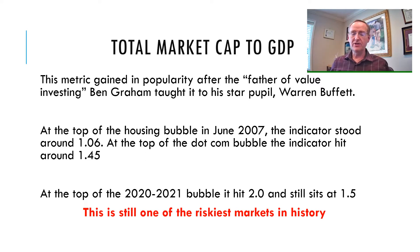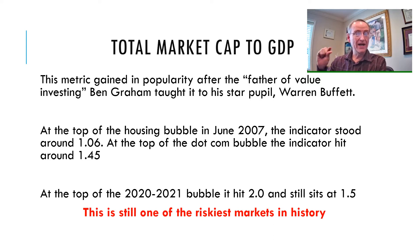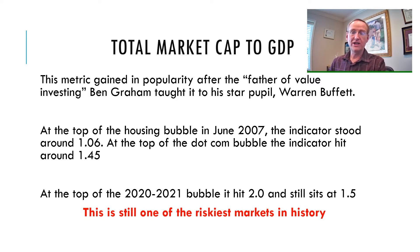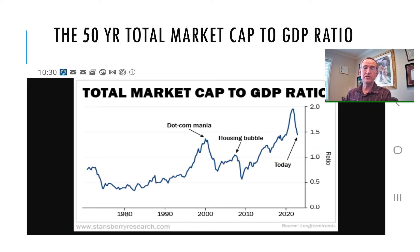At the top of the housing market bubble, the indicator stood at 1.06 — so it was above that 1 level. At the dot-com boom, the market was running and it hit 1.45, so it was extremely overvalued at that point. The market hit 2 for the first time ever at the end of last year when the markets peaked. And even after the most recent sell-offs down through October of this year, we're still sitting at 1.5, which is above where we were during the dot-com boom back in 1999 to 2000.